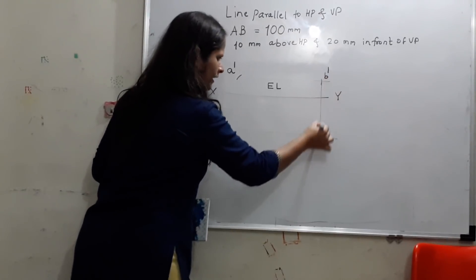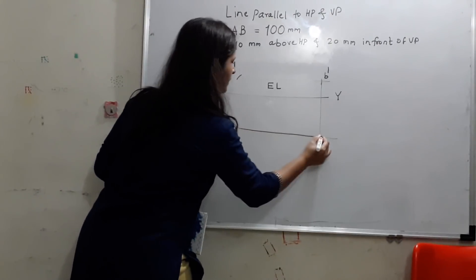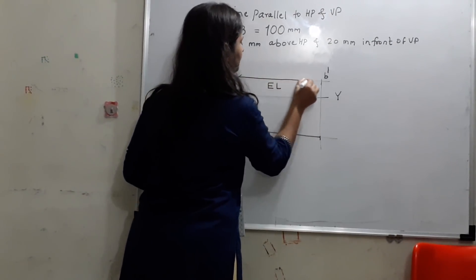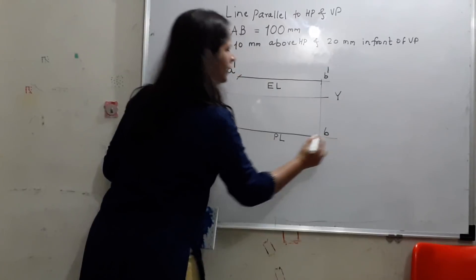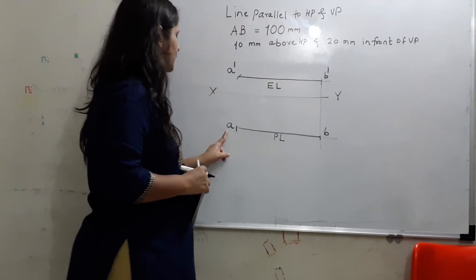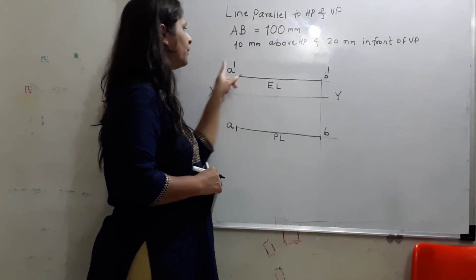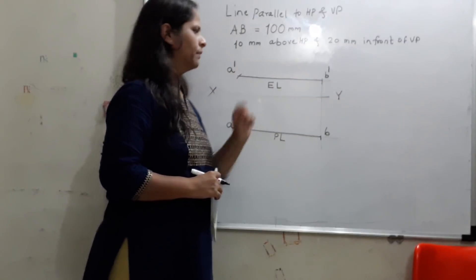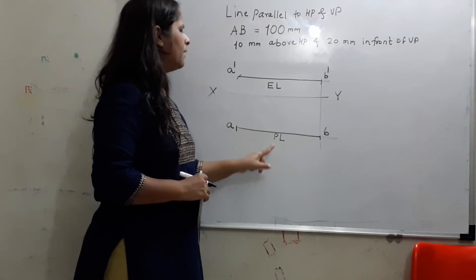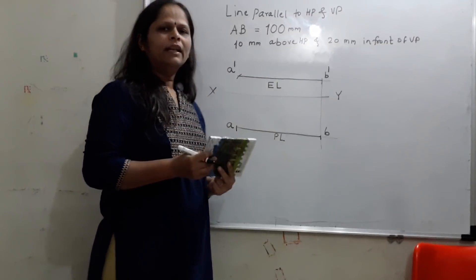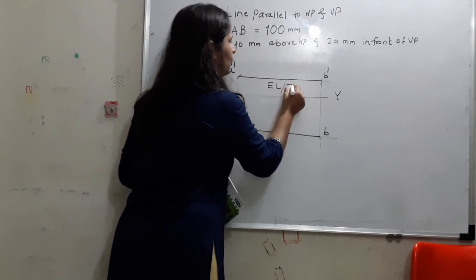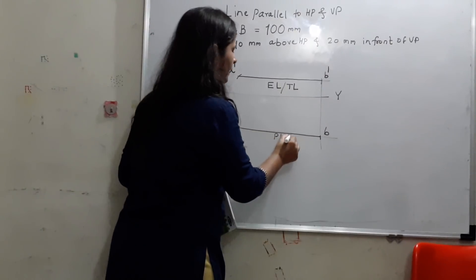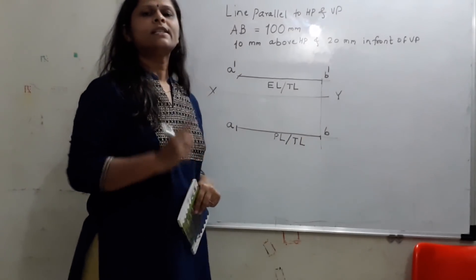From B-dash, I will be taking the projection for the top view. This will be the top view or plan of the line. This will be the plan length of the line — this is point A and B. The top view is represented using small letters A and B. The front view is represented with a small letter having a dash symbol. This is the elevation length and plan length. When the line is parallel to both VP and HP, we get the true length of the line in the front view as well as in the top view. This is Case 1.